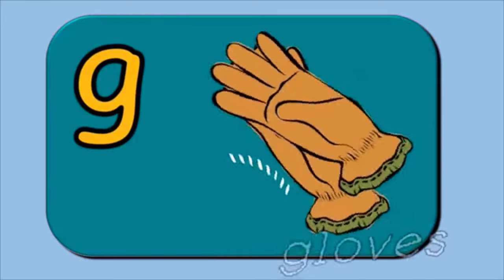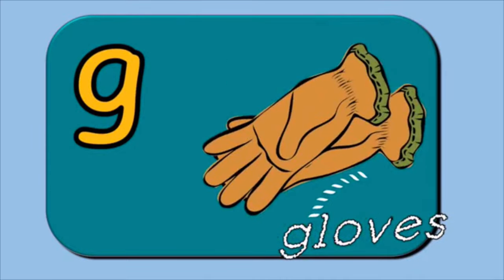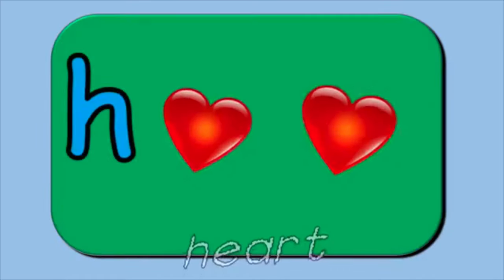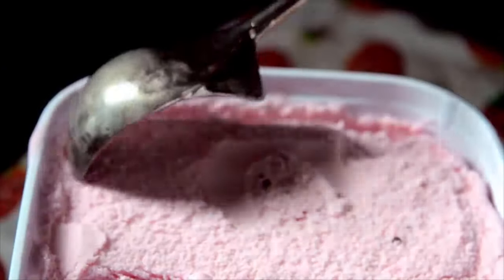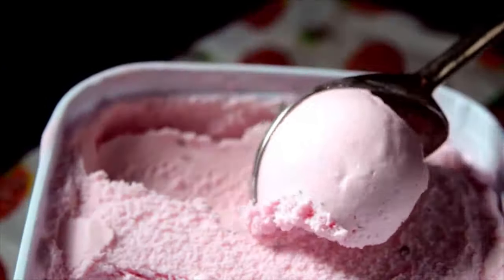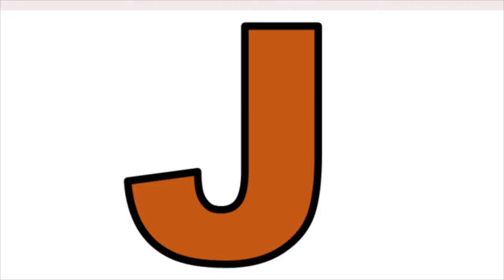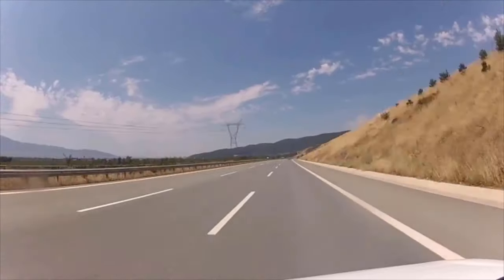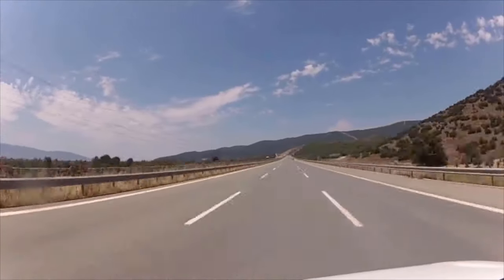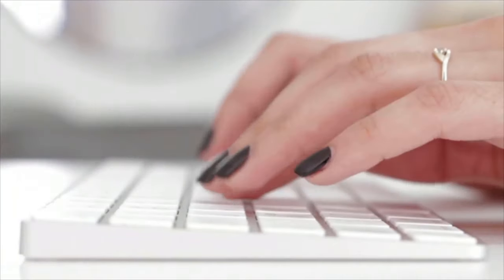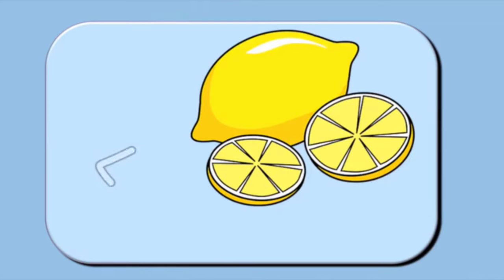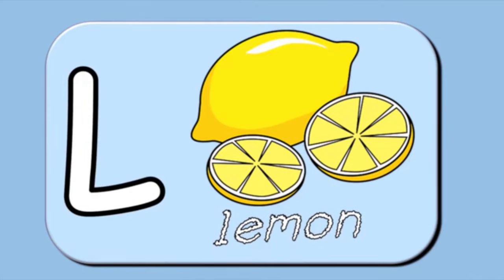G is for Gloves. H is for Heart. I is for Ice Cream. J is for Journey. K is for Keyboard. L is for Lemon.